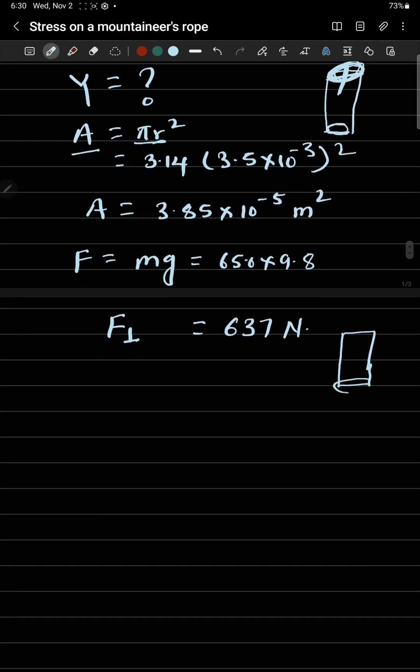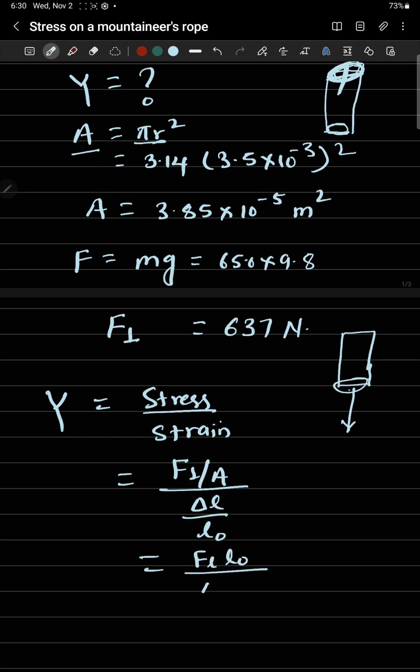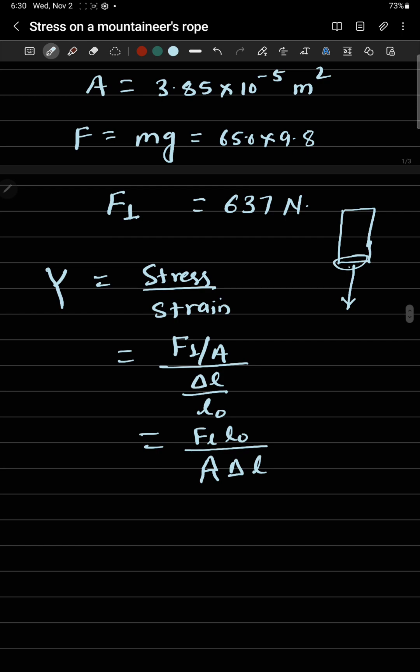I have the force applied, this perpendicular force acting on the rope. Now I have the formula for Young's modulus. Young's modulus is stress divided by strain, which is F over A divided by delta L over L0. If I simplify this formula, I will get Y equals F L0 divided by A times delta L.